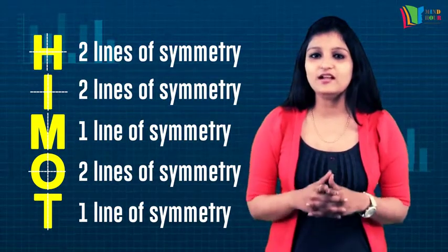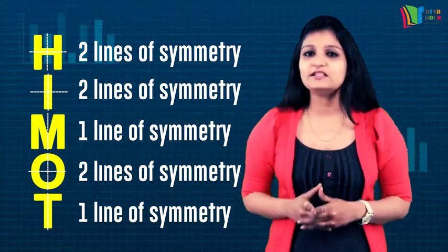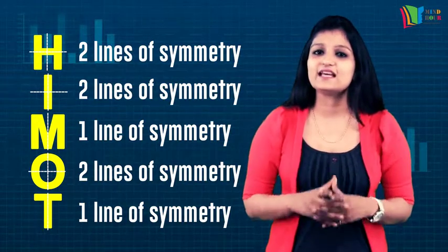M has one, which is vertical. O has two: one vertical and one horizontal. T has one, which is vertical. Go over the video again and see if you are comfortable with these keywords and phrases or not.